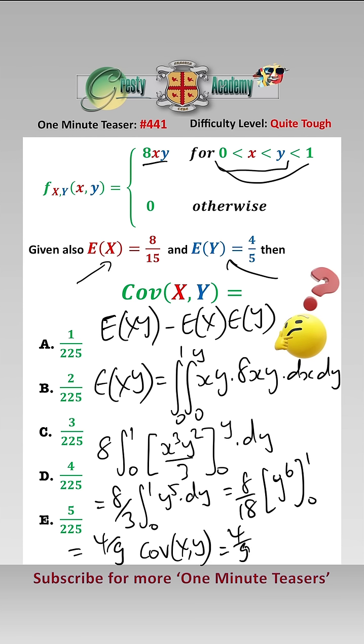And therefore covariance of X and Y equals what we've just found 4 ninths take away this times this 8 fifteenths times 4 fifths and if we put all of that lot over 225 we get 100 minus 96 which is 4 over 225 which is answer D.